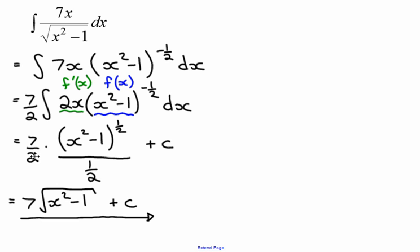Cool. Then I go, so there's my 7 over 2. Then I go inside and then I'll subtract 1. So that's my negative to the half. Then I go inside, differentiate x squared minus 1 and I get 2x.